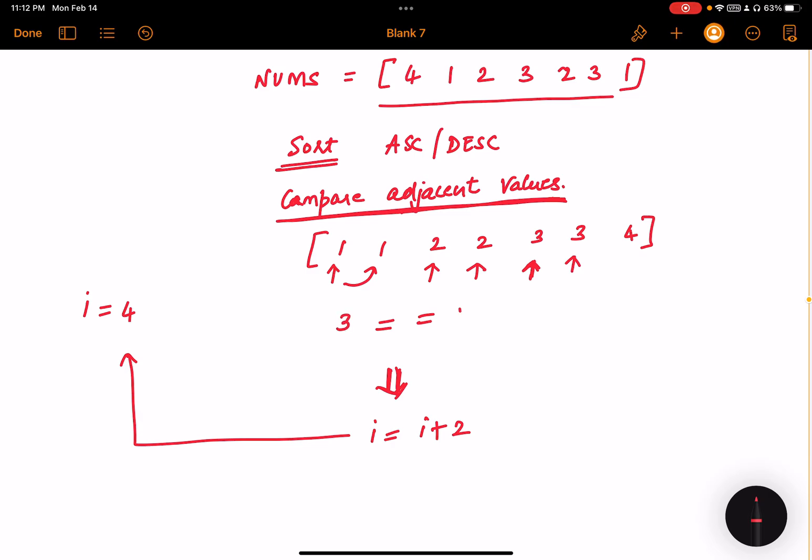So i will now be four. So we are now comparing these two values. So now we are comparing three and three. They are still the same, so we will increment our i to six.